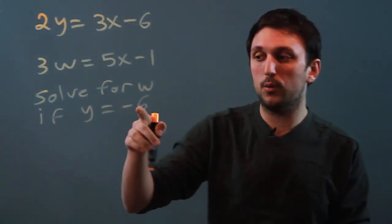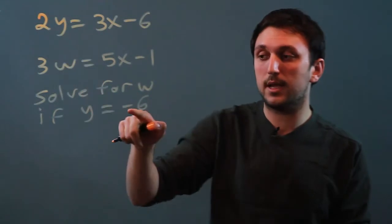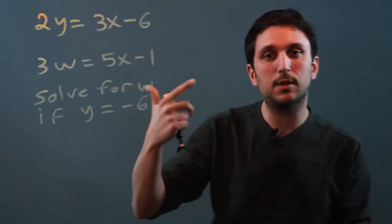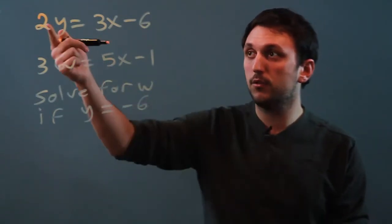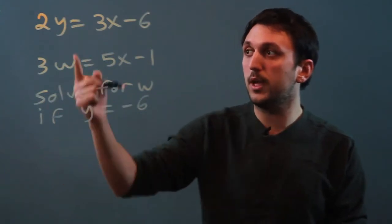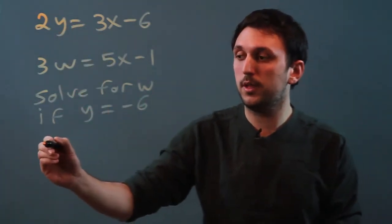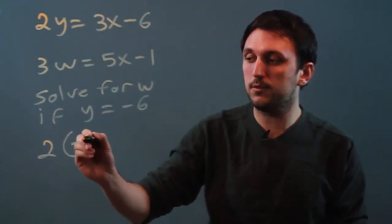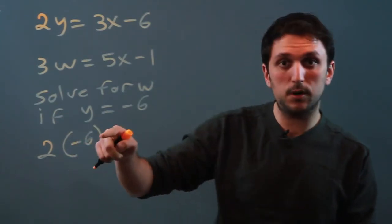Well, we're going to substitute negative 6 for y. So this negative number just has to be treated a little bit more carefully. So let's start with that first equation. We have 2y, well that's 2 times negative 6, and it's very important to put the parentheses.